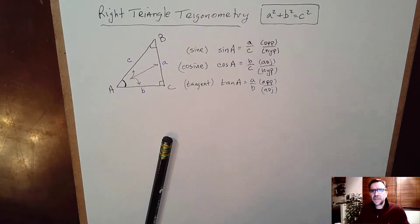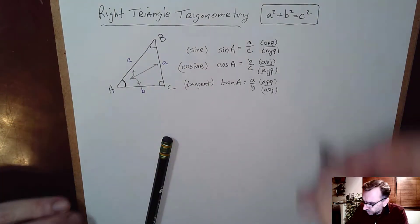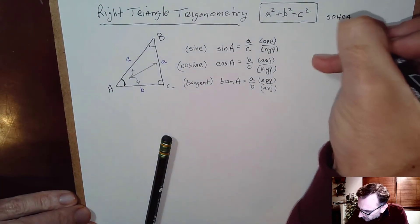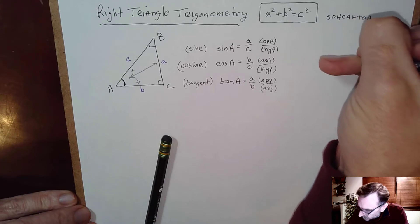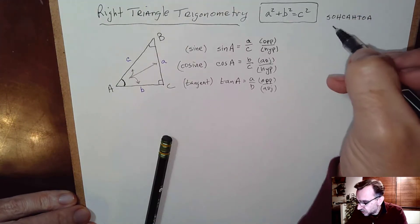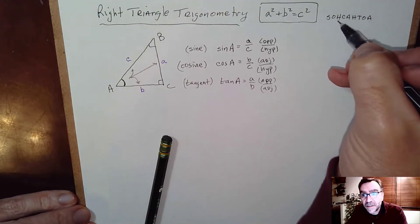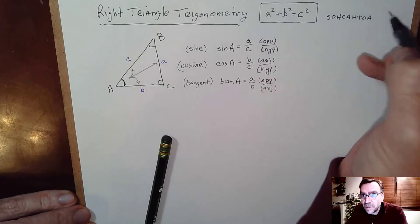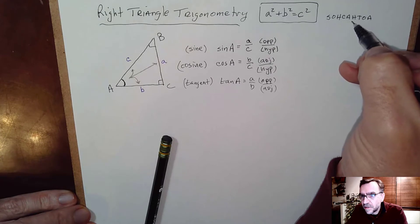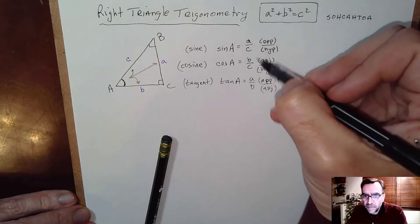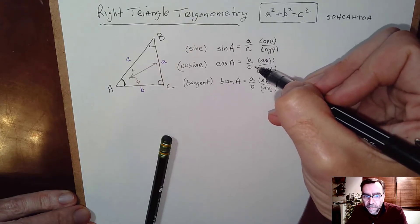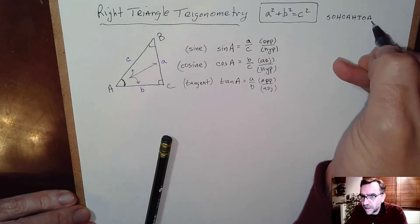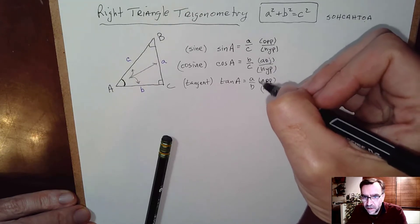One way to memorize this is SOHCAHTOA. This reads: sine is opposite over hypotenuse (A over C), cosine is adjacent over hypotenuse (B over C), and tangent is opposite over adjacent (A over B).